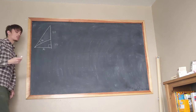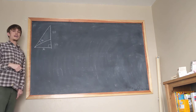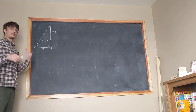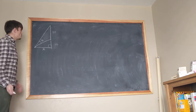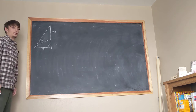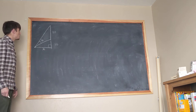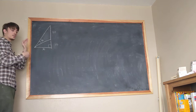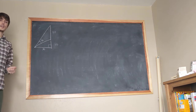We label the distance from the screen as x, and the goal is to find the value of x such that theta is maximized, giving us the best viewing angle. Once you're done with this problem, you can actually apply it to your own living room to find the best place to put your couch. Let's go ahead and do all the math.